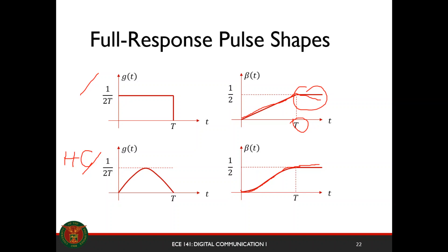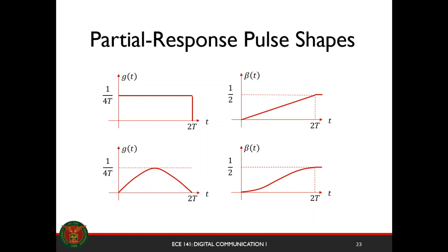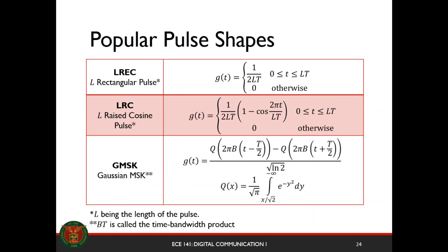If you're going to design the pulse shapes, make sure that the area of your pulse is always equal to one half. Even if you have a partial response pulse shape where the response exceeds T and is an integer multiple of T, make sure that the area is still one half, such that after 2T the pulse ends at one half when integrated. Some popular pulse shapes are L-REC, an L-rectangular pulse, and L-raised cosine pulse, where L is the length of the pulse.